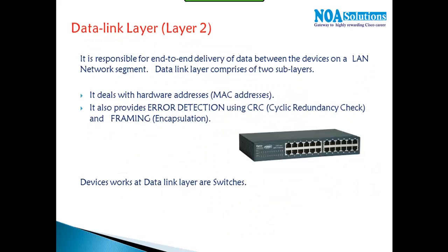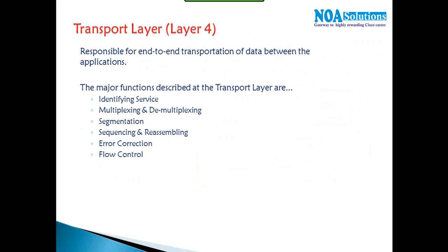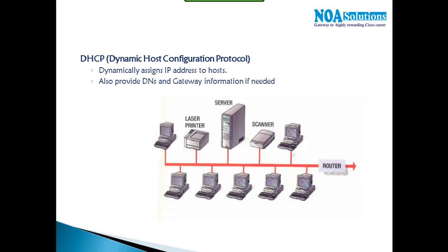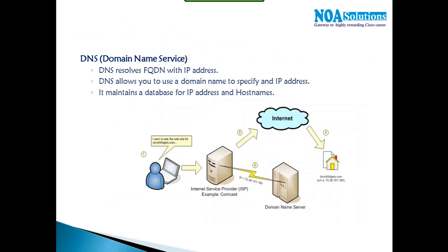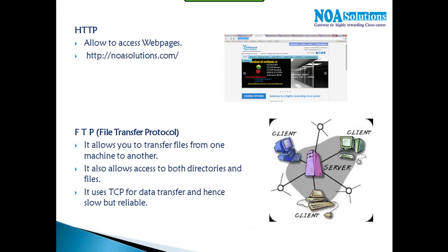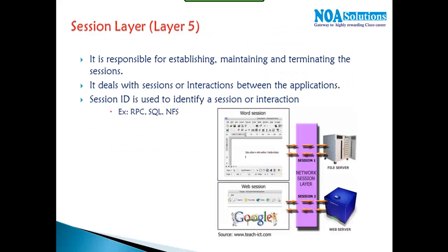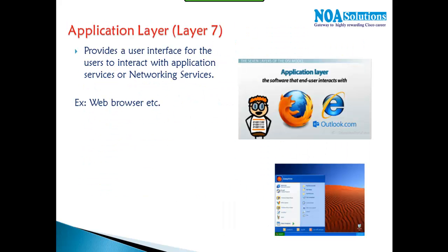That is what the OSI model defines — how the communication process happens between two networking devices. In practice, we use only TCP/IP protocols. The protocols we have discussed include DHCP, DNS, TFTP, and SMTP. The entire TCP/IP model or OSI model defines the format and how communication happens.